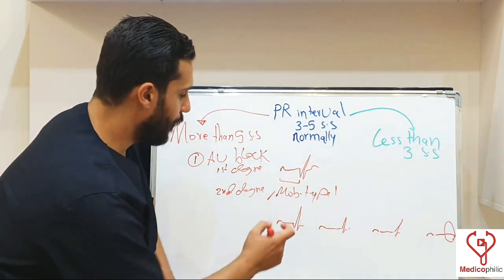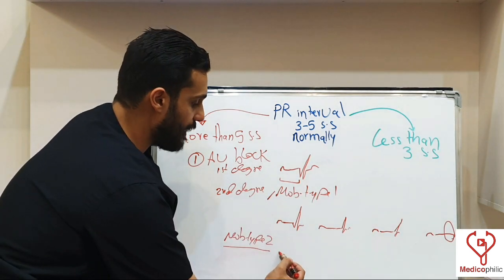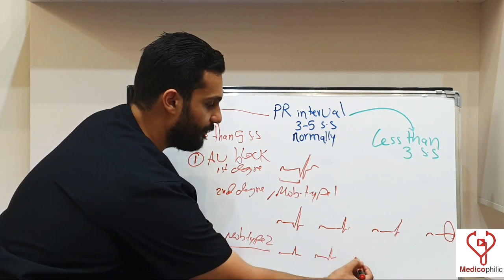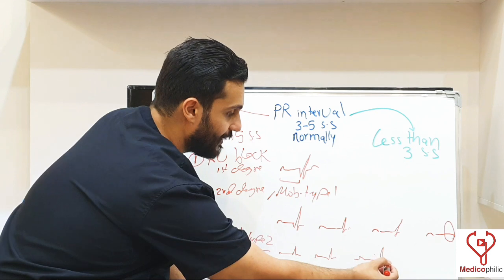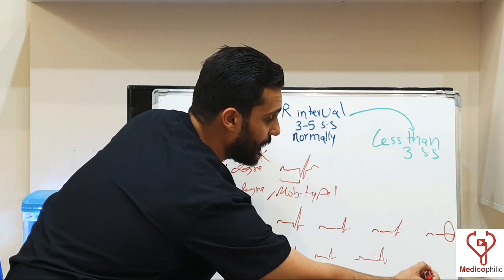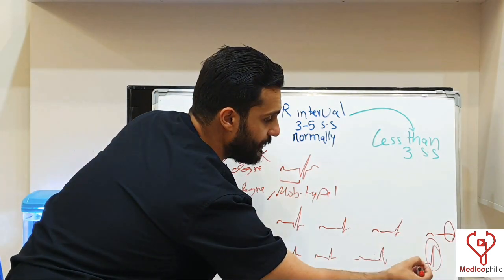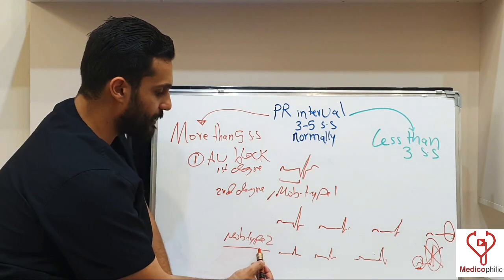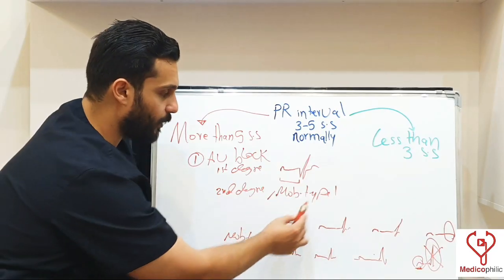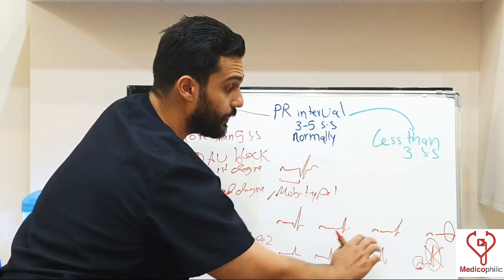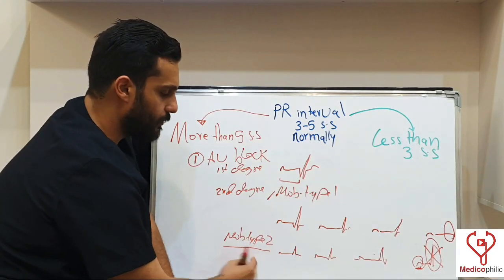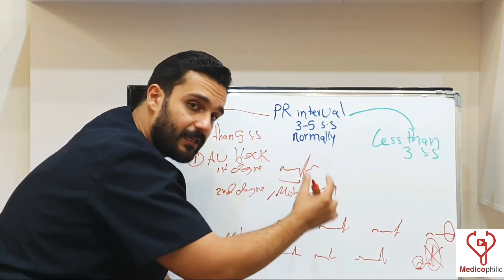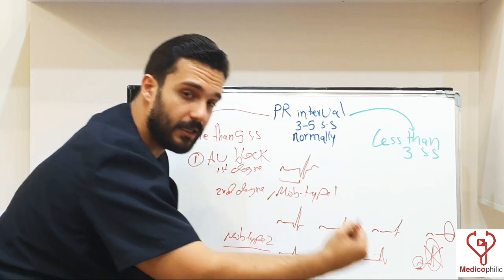Coming to Mobitz type 2. In Mobitz type 2, you see fixed PR interval duration in the same lead, then a sudden drop of the QRS from the P wave. What is the difference between Mobitz type 2 and Mobitz type 1? In Mobitz type 1, there is progressive prolongation of the PR interval before the drop of the QRS. In Mobitz type 2, there is no progressive prolongation — only a fixed PR interval, then sudden drop of the QRS.